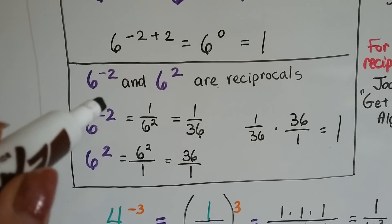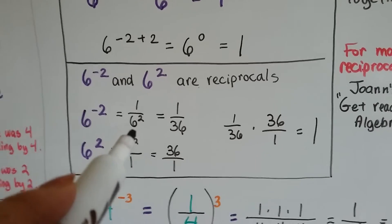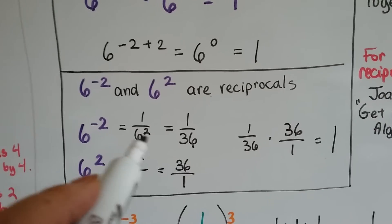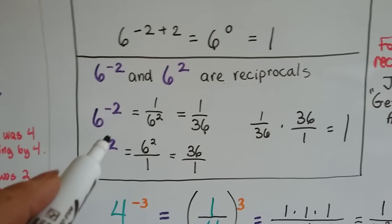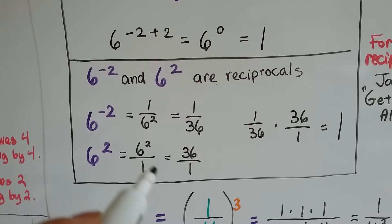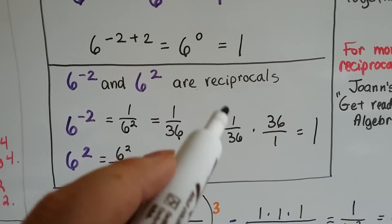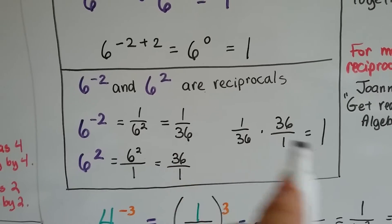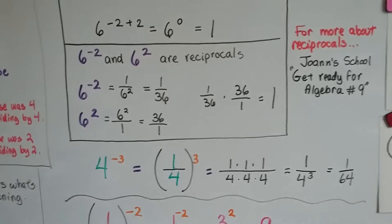We've got 6 to the negative 2 and it equals 1 over 6 to the 2nd power. The negative sign got taken away as it got written as a fraction. And that's 1 over 6 times 6, or 1 36th. With the positive exponent, it means 6 to the 2nd power over 1, which would be 36 over 1. And 1 36th times 36 over 1 equals 1, because it becomes 36 over 36 — the numerator and denominator are the same, so it equals 1.